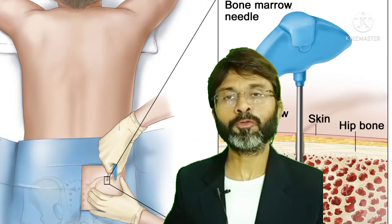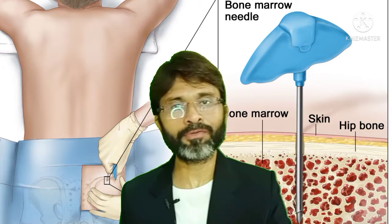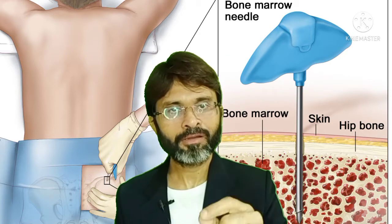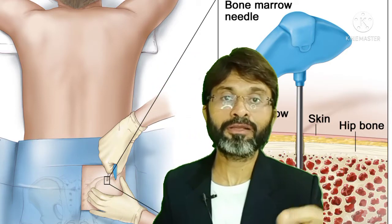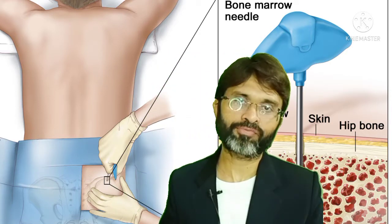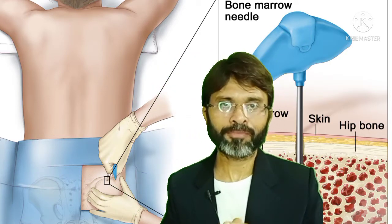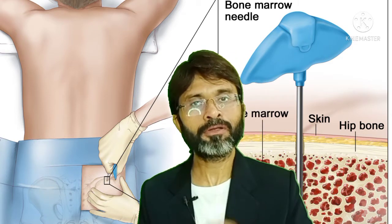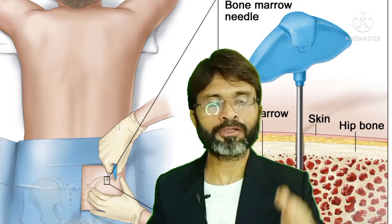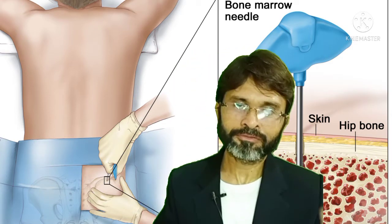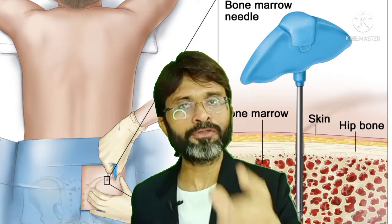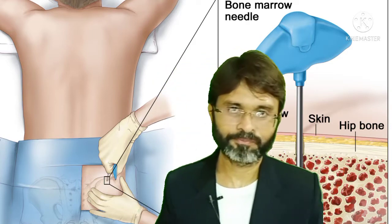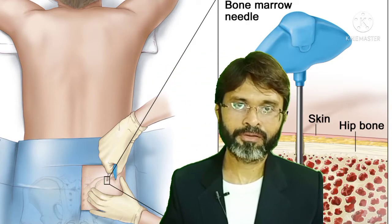If the Reed-Sternberg cell is not found in the biopsy, that means the person has a disease, but it is non-Hodgkin's disease. This is also a cancer of the lymphoid tissue.